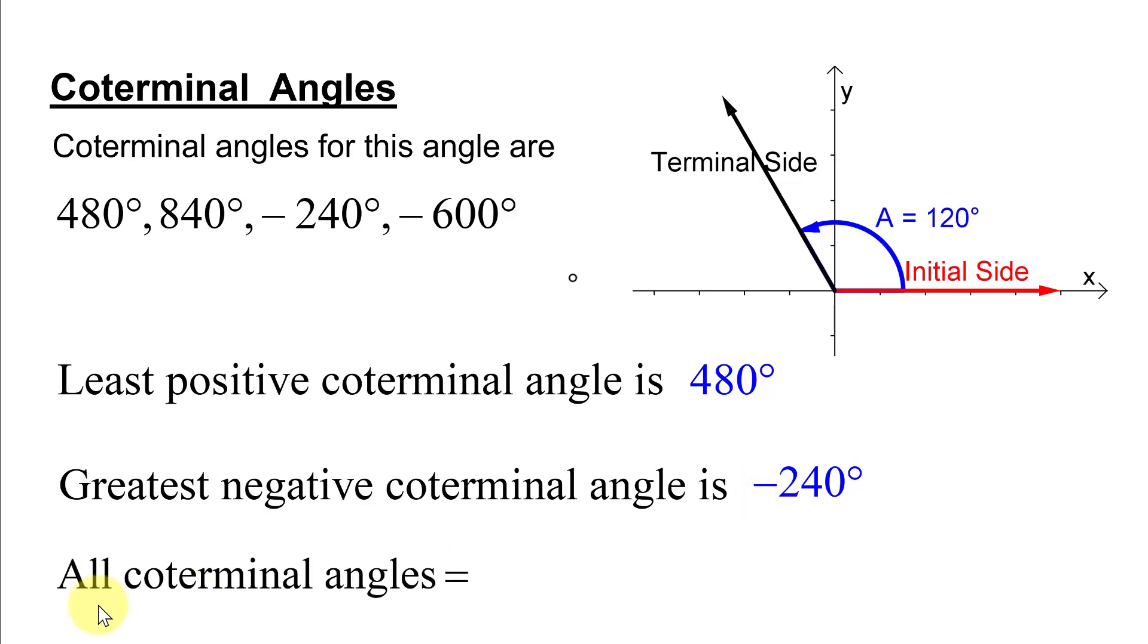And finally, to find all coterminal angles, you take 120 degrees, the given angle, and the way we represent adding and subtracting multiples of 360 degrees is we write 120 degrees plus 360 degrees times n, where n represents any integer. You do not have to use the variable n. You could use k or a different variable, but you must state it represents any integer.